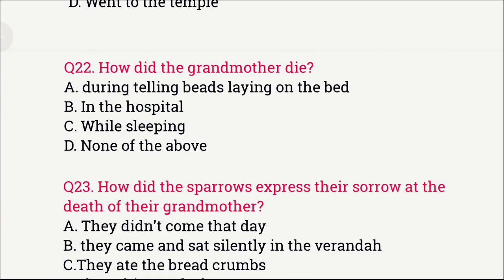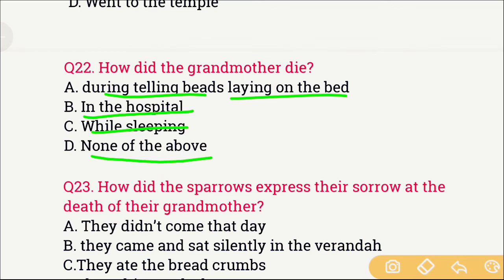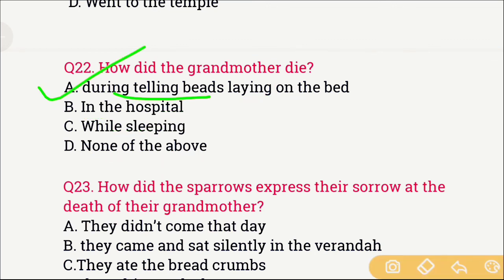Question number 22: How did the grandmother die? The options are: A) During telling her beads, lying on the bed, B) In the hospital, C) While sleeping, and D) None of the above. The right answer is option A — she died while telling her beads, lying on the bed.